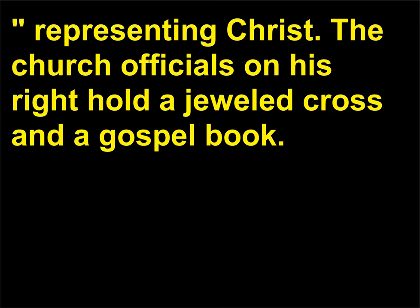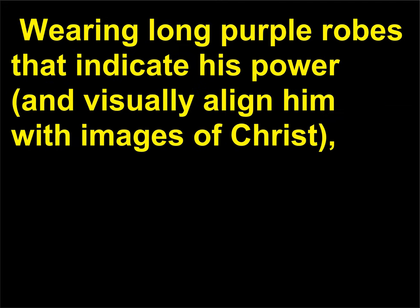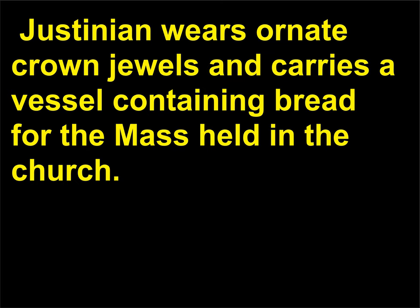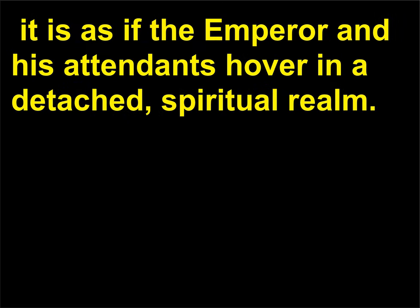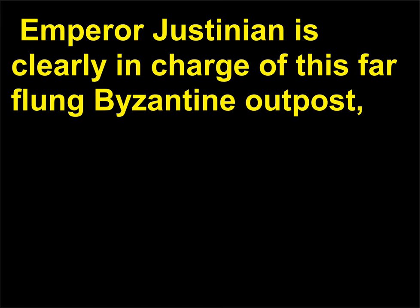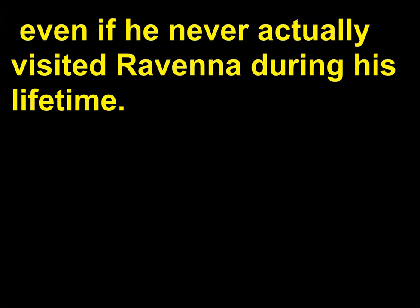The church officials on his right hold a jeweled cross and a gospel book. Wearing long purple robes that indicate his power and visually align him with images of Christ, Justinian wears ornate crown jewels and carries a vessel containing bread for the mass. Against the glittering gold background, it is as if the emperor and his attendants hover in a detached spiritual realm. Emperor Justinian is clearly in charge of this far-flung Byzantine outpost, even if he never actually visited Ravenna during his lifetime.